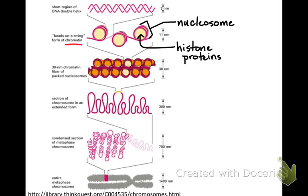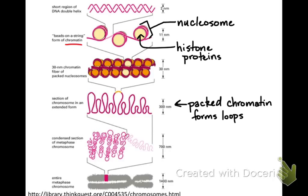Before condensing, DNA looks like a bunch of tiny beads with strands running between them. Condensins help to further compact the chromosome into a thick rod. You can see that the packed chromosome forms loops, with proteins helping form those loops and other proteins helping the loops coil into that thick rod.